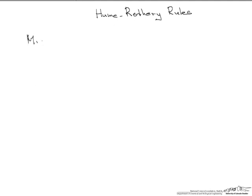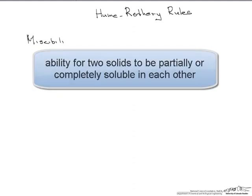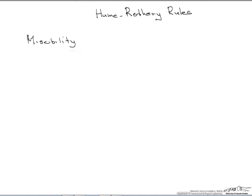We're going to talk about miscibility, which is the ability for two solids to be partially or completely soluble in each other. What are the things that are factors in whether two solids will be miscible? These are what are known as the Hume-Rothery rules.